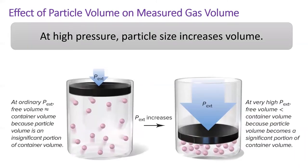If we imagine a real gas being compressed by high pressure, we see that the particles which used to be spread out are now much closer to each other. Under such high pressure, the size of the particles becomes significant and the actual volume of the gas becomes higher than what we would calculate with the ideal gas law.